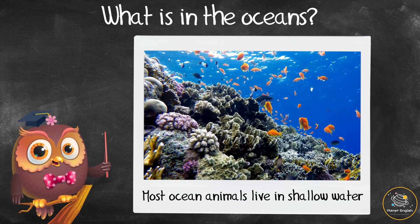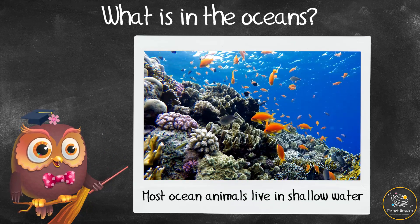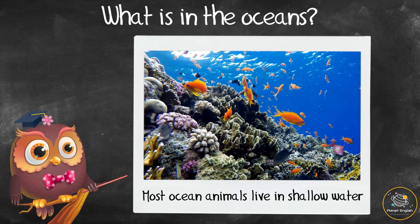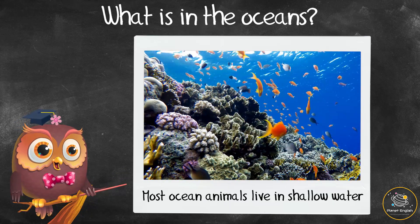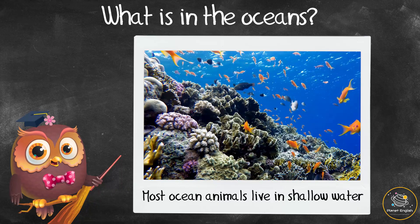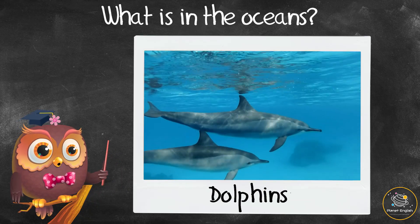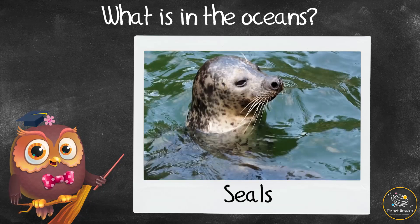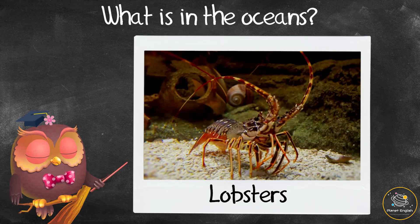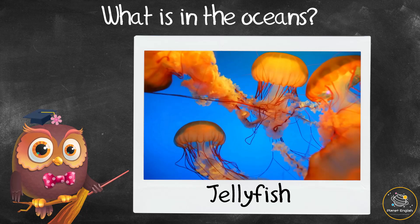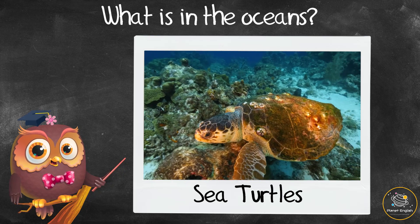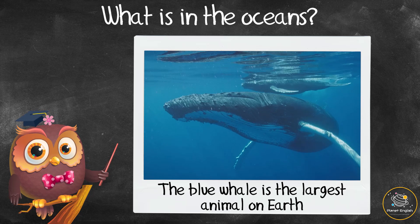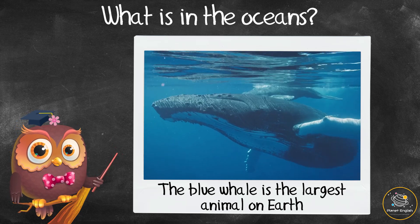Corals and sea anemones look like plants, but they are actually animals. Most ocean animals also live in the shallower waters where they can feed on the plants and other animals near the surface. There are thousands of different types of animals that live in the oceans, such as fish, dolphins, sharks, seals, lobsters, jellyfish, and sea turtles. The blue whale is the largest ocean animal and also the largest animal on Earth.